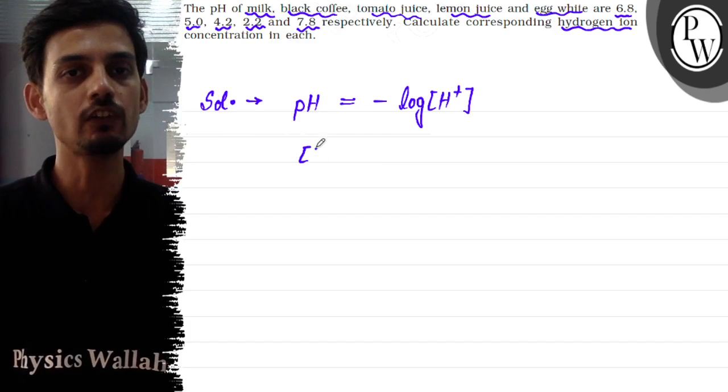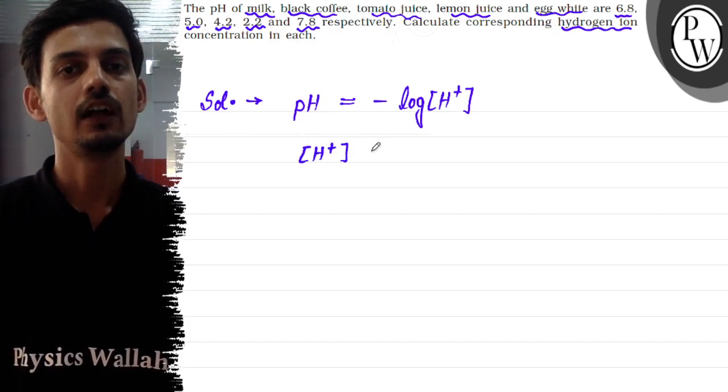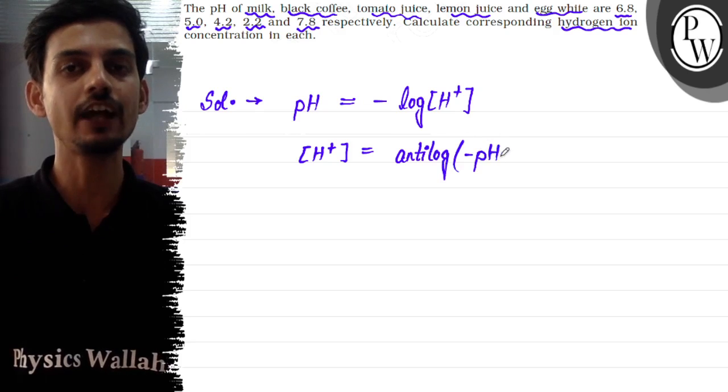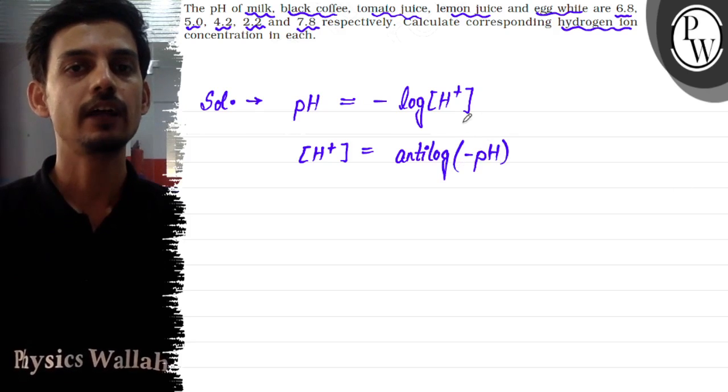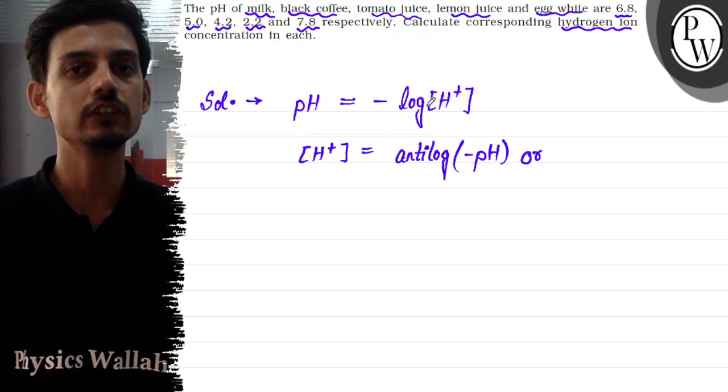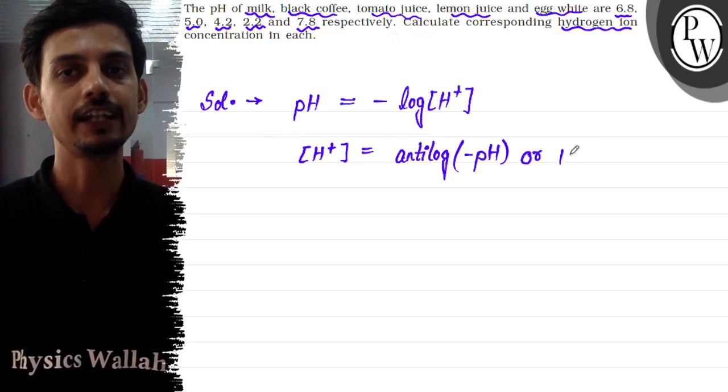So from pH, we can find the concentration of H+. Taking antilog, this will become antilog of minus pH value. By taking antilog of the pH value, we can find H+ ion concentration. And antilog is nothing but the base of log, which for normal log is 10. So 10 to the power minus pH can also be written.